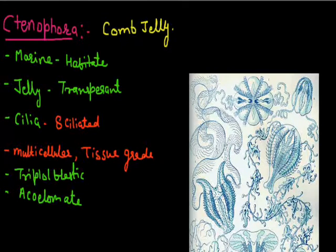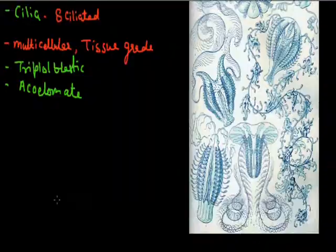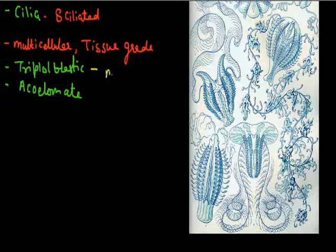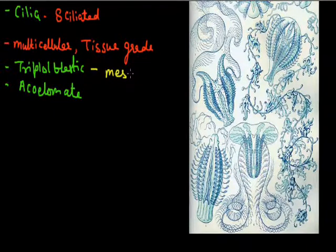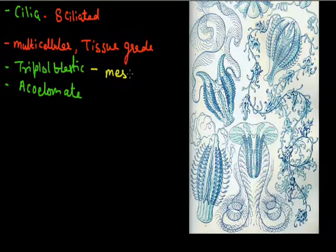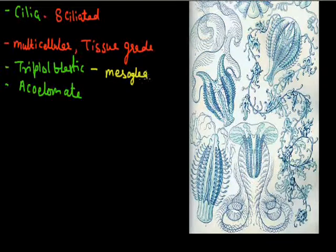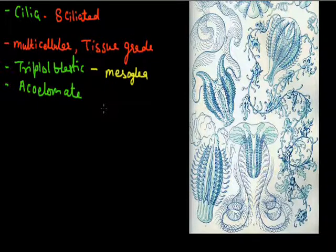These animals have a mesoglia. Mesoglia is also present in cnidarian groups. It is an acellular layer — without cells — it is a protein layer present between the outer and inner membranes.